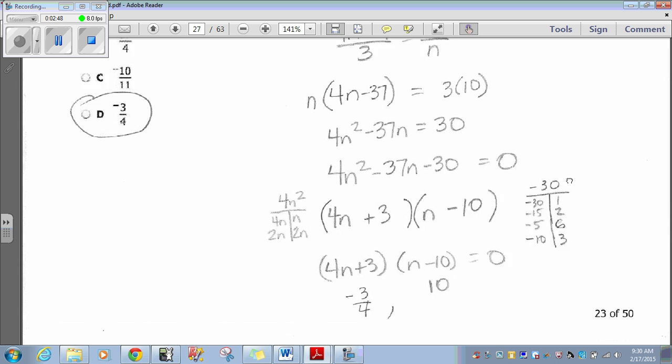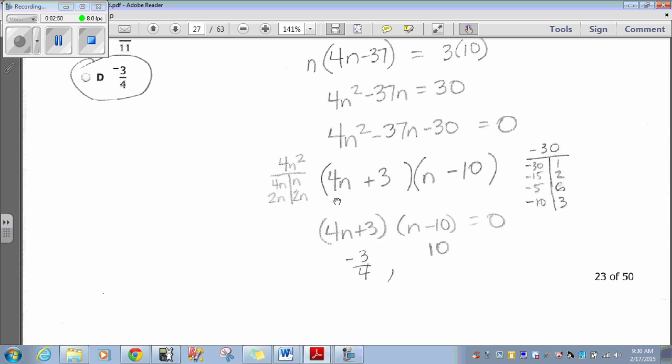Now, again, like I said previously, the first two numbers here are going to be factors of that 4N squared. So, if I take factors of 4, it's either going to be 4N and N or 2N and 2N. In this case, I picked 4N and N to get my 4N squared.